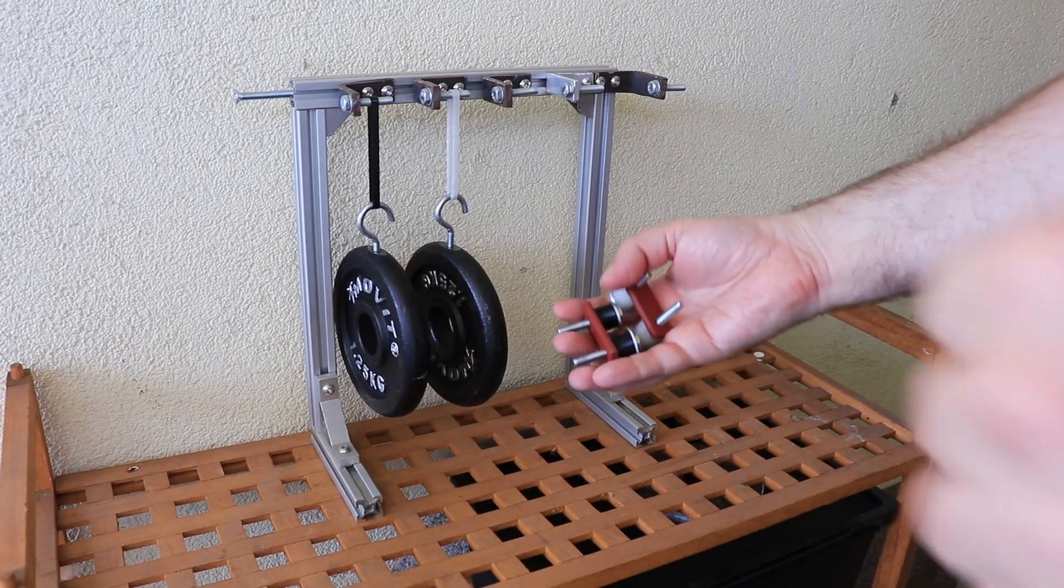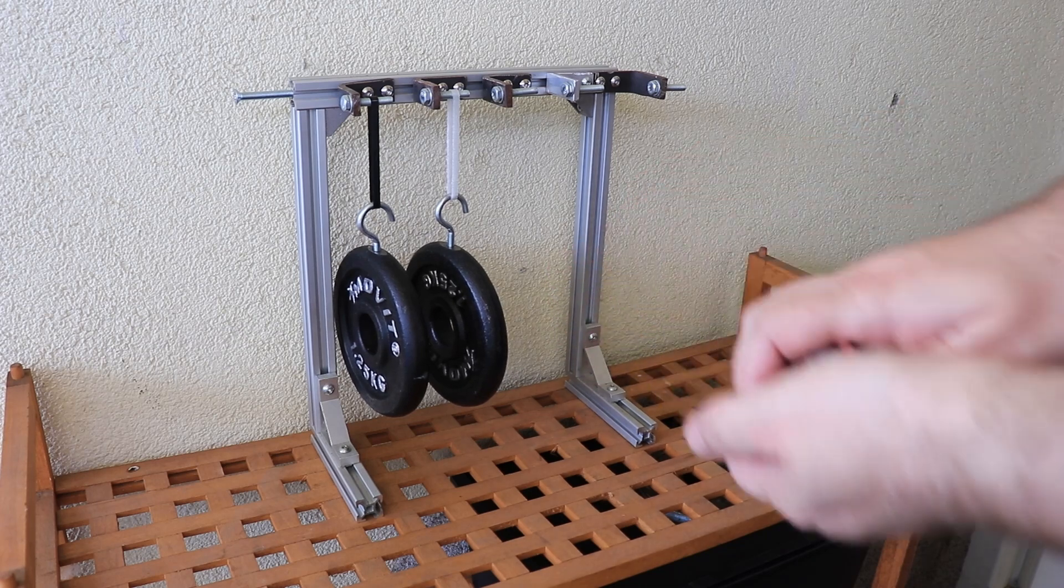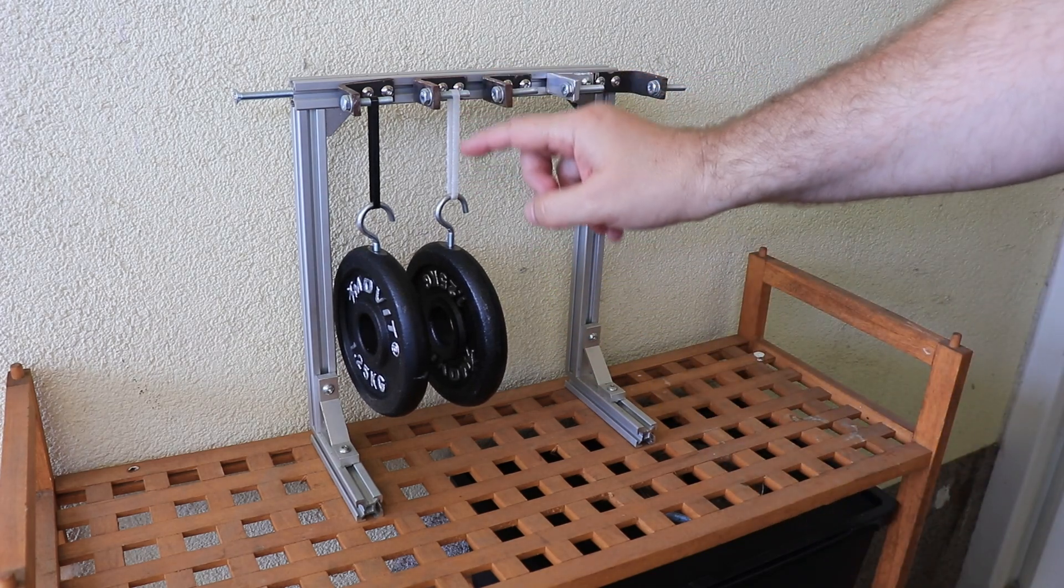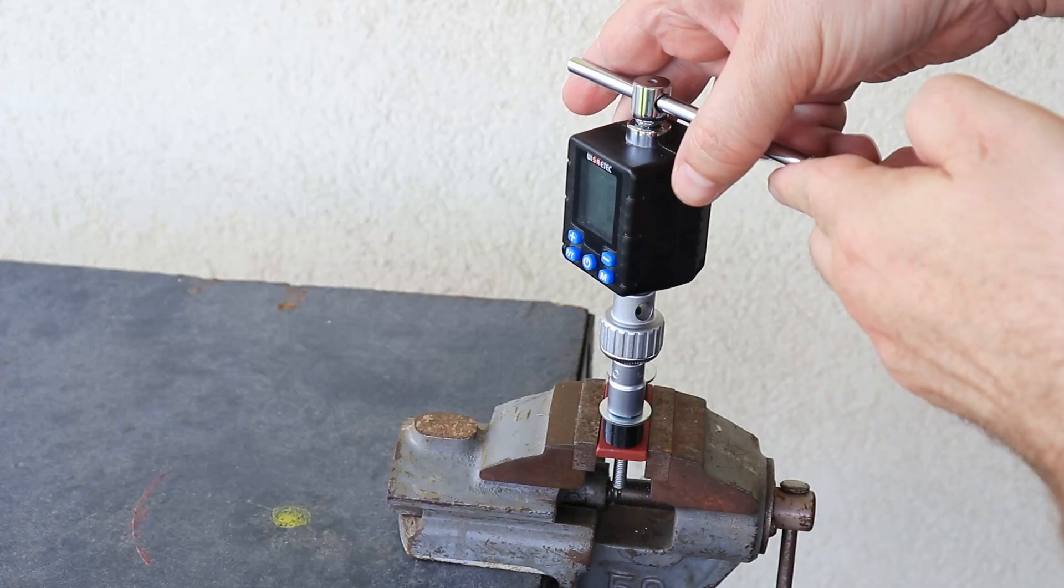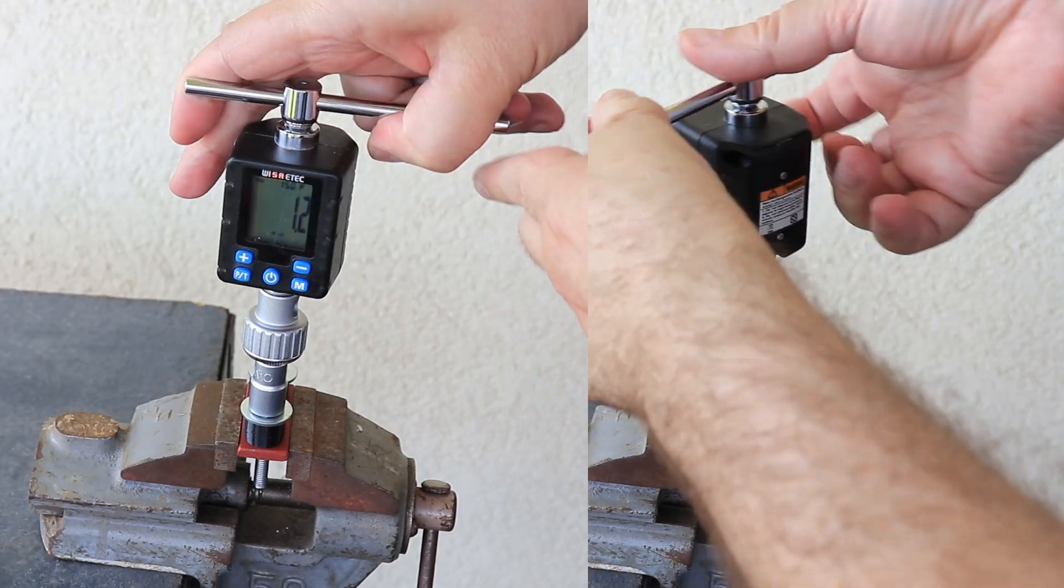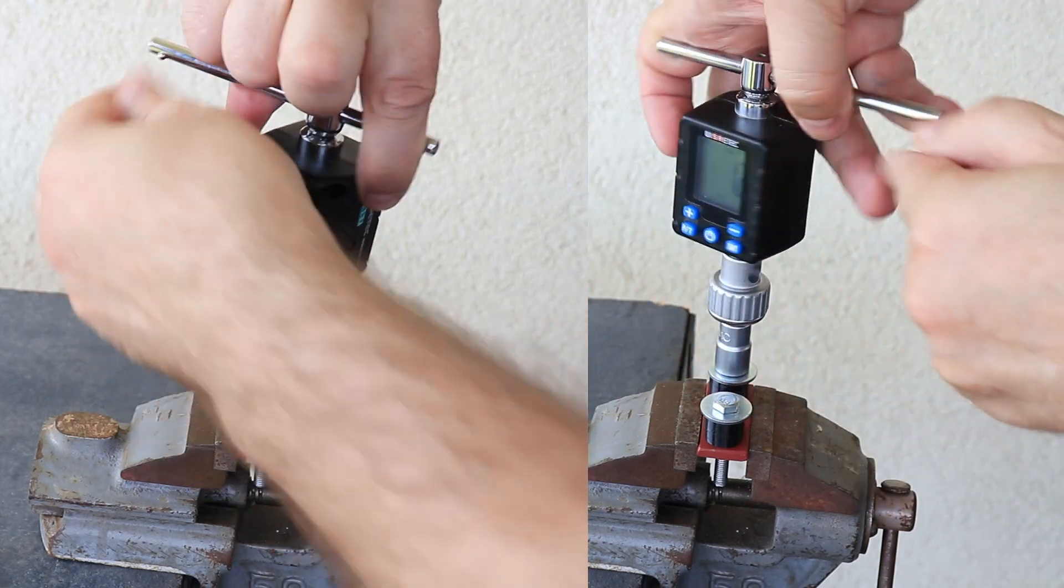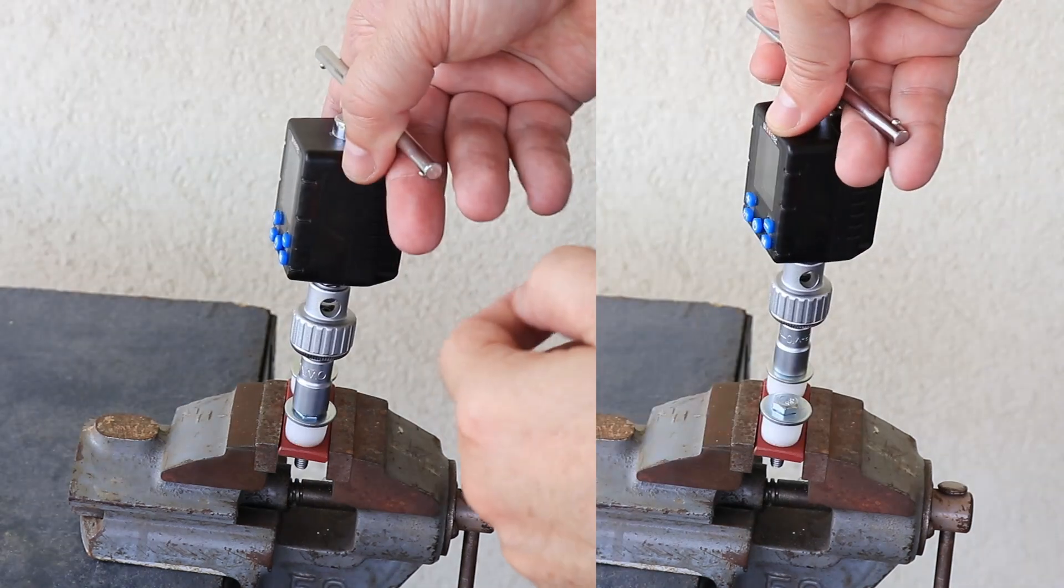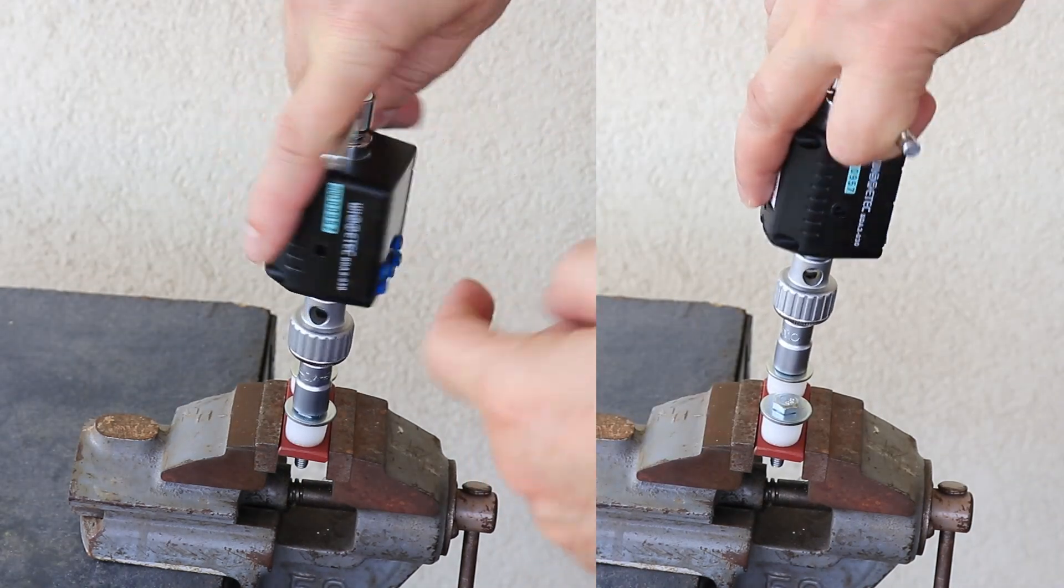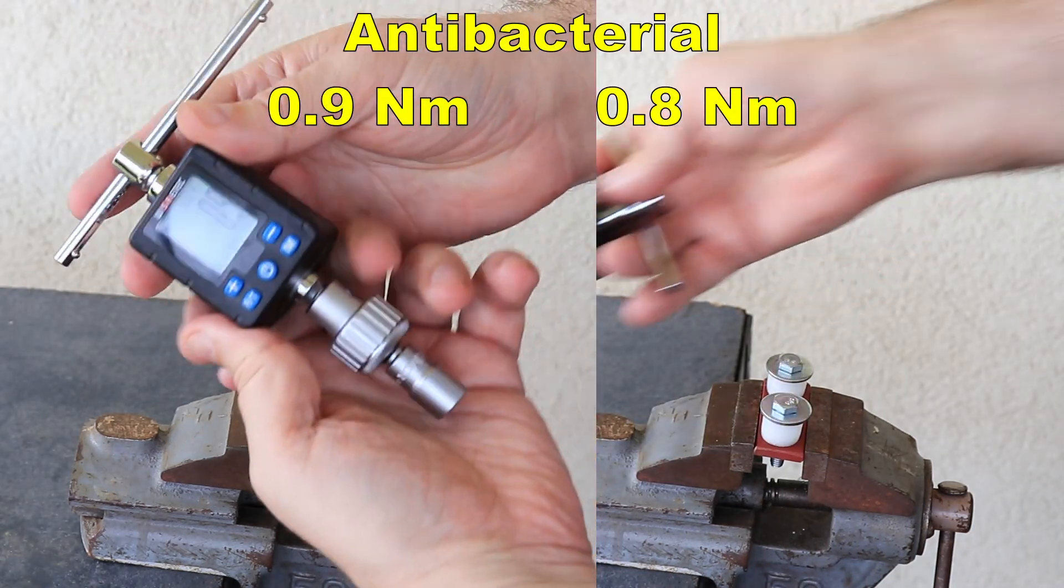And now after one day let's check the untightening torque. In the meantime I already measured the deformation on these scrape test objects. 1.2, 1.2, 0.8, 0.9.